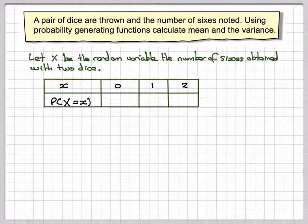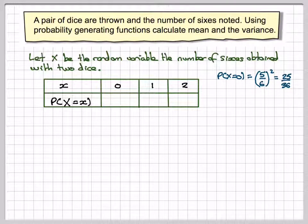We need to work out the probabilities of each of these. The probability that X is equal to 0 is just going to be 5/6 squared, which is 25 out of 36.